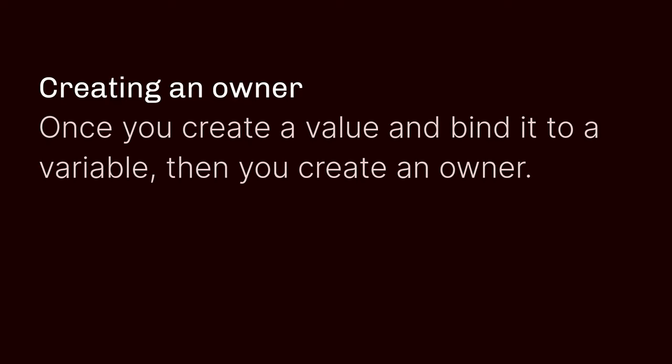Let's take a look at how ownership works. To create an owner, you create a value and bind it to a variable. This term 'binding to a variable' is a formal way of saying assignment. Once you've created the data, you create an owner. In our example, we have a variable named elements, created with a call to Vec::new, which is a static method on the vector type. Now elements is the owner of this vector, which has no elements inside it.